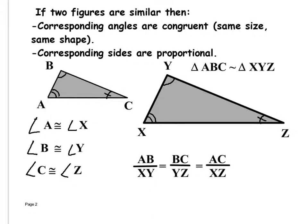If two figures are similar, there are two mandatory things about them. First, the corresponding angles are congruent — the word congruent means same size and same shape. They have the same angle measure, which is important. Second, corresponding sides are proportional.